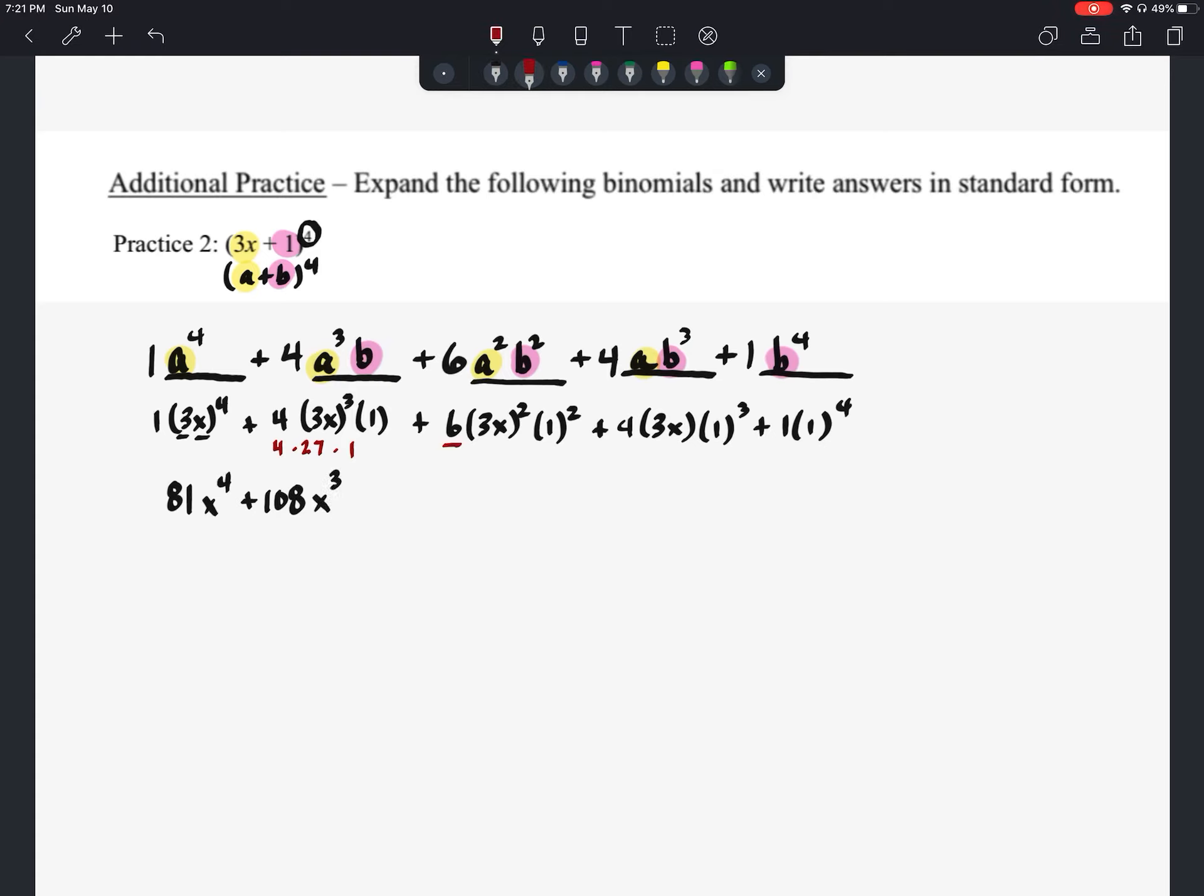The next one we've got 6, and then we've got 3 squared is 9, and then 1 squared is 1. So 6 times 9 times 1 should be 54. And then our x is being squared. Next one here, we've got 4 times 3 times 1 cubed would be just 1. So that's going to give us 12 times an x. And then the last one, 1 times 1 to the fourth, is just going to end up being 1.